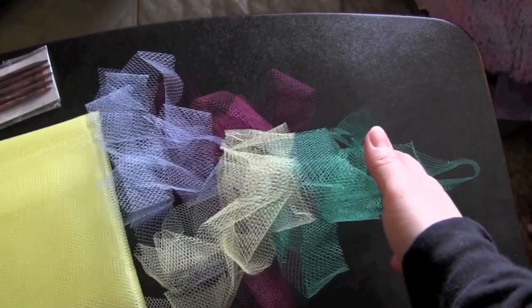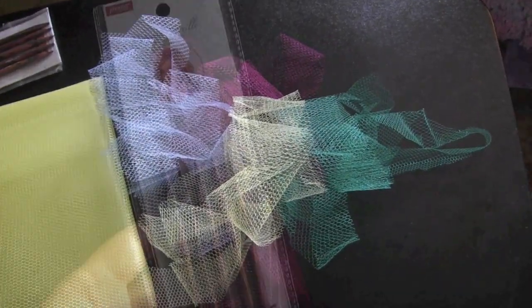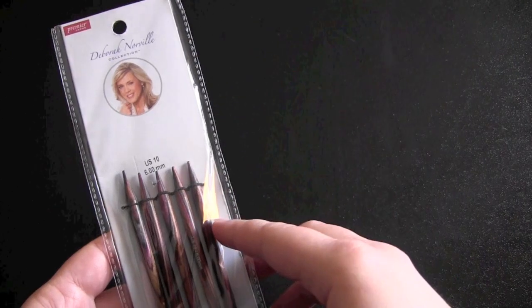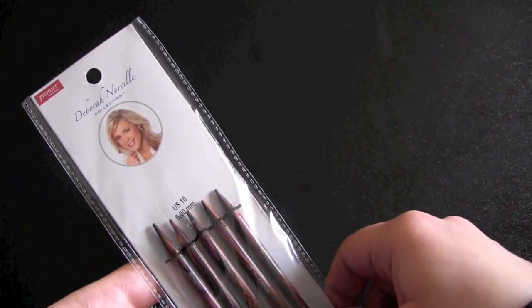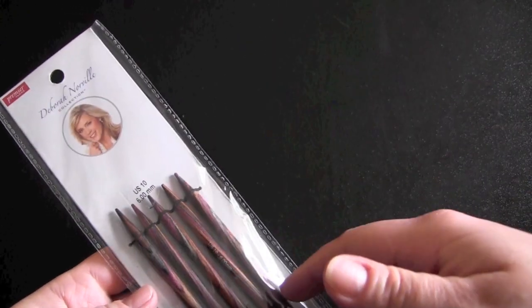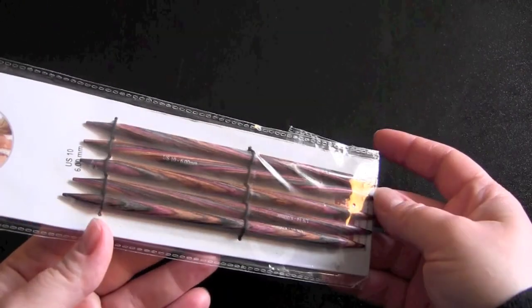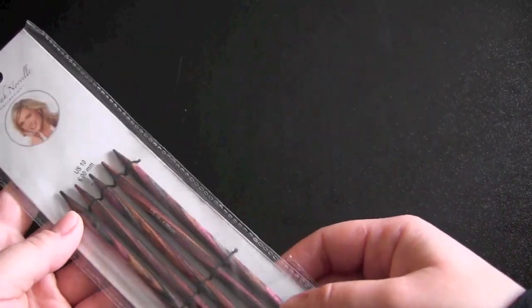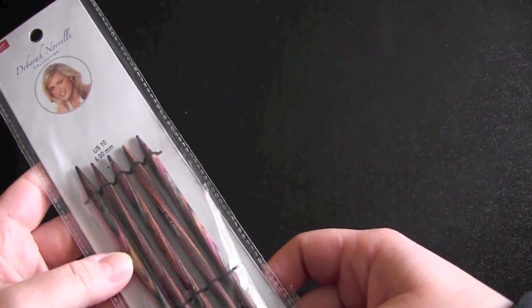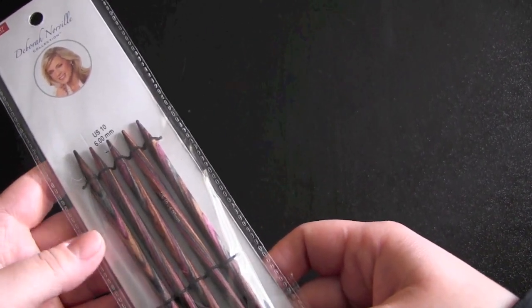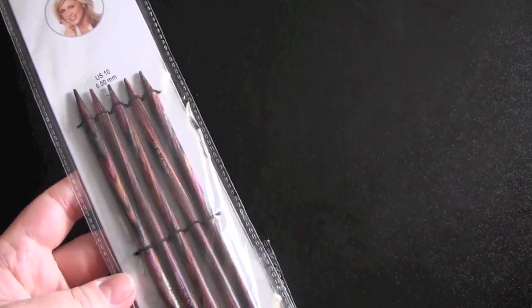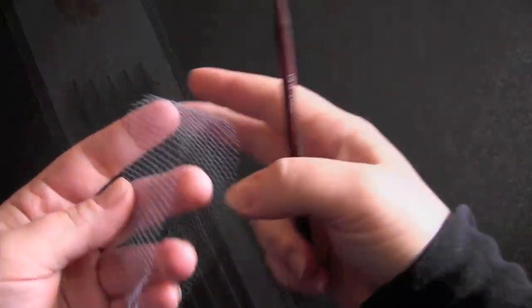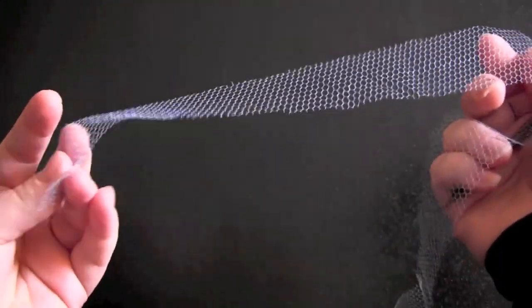I'm going to use these size 10 double-pointed needles. These are Deborah Norville needles. You can use straight needles, you can use circular needles, whatever you have. They don't even have to be size 10. This is just the size that I have found feels the most comfortable to me for knitting my scrubbies. I'm going to start here with my first strip and I'm just going to do a long tail cast on.